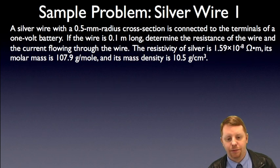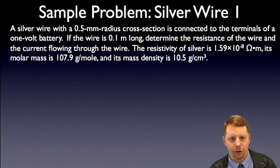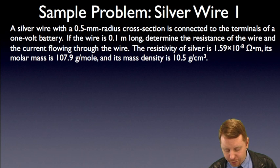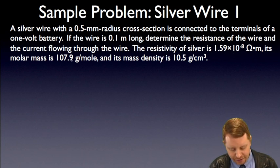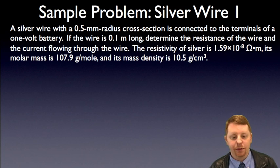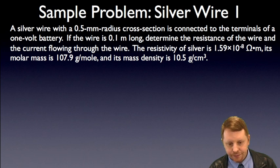Now, what I want to do, instead of showing a bunch of different problems, let's take one involved problem and do it in a couple different ways, a couple different steps. So, we're going to start off with the problem of a silver wire. It has a half millimeter radius cross-section, and it's connected to the terminals of a one volt battery. If the wire is 0.1 meter long, determine the resistance of the wire and the current flowing through the wire. We're given that the resistivity of silver is 1.59 times 10 to the minus 8 ohm meters, its molar mass is 107.9 grams per mole, and its mass density is 10.5 grams per cubic centimeter.